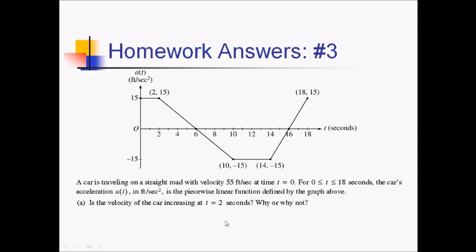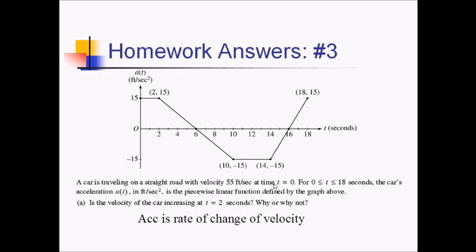For number three, a car travels on a straight road. The acceleration between zero and eighteen seconds is graphed, and we want to know if velocity is increasing at t equals two. Acceleration is the rate of change of velocity, so wherever acceleration is positive, velocity is increasing. Since a of 2 is greater than zero from the graph, the velocity must be increasing at t equals two.